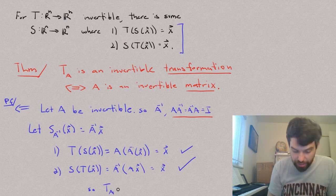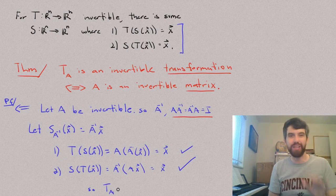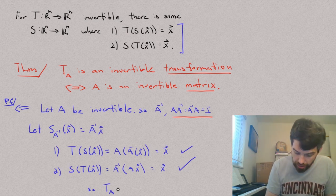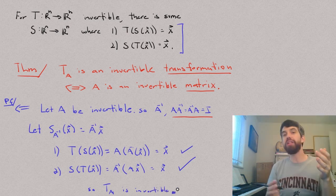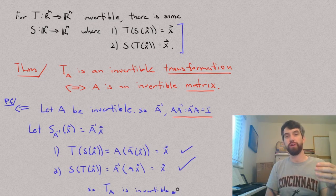So, that transformation T, which is defined by the matrix A, sometimes I put the A in just to make it clear. Sometimes I don't need to. It doesn't really matter. So, TA is invertible. And I'll leave the other direction of this proof for you.